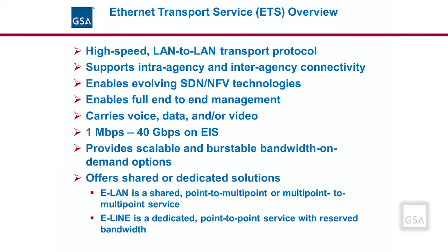Ethernet can be either a shared or dedicated service. Shared Ethernet service means the traffic is multiplexed and carried over shared or common facilities, and competes with other traffic for available bandwidth. The ETS ELAN service option is an example of a shared service. Dedicated bandwidth means all users have a portion of bandwidth dedicated solely to them. The ETS ELAN service option is also an example of a dedicated point-to-point service with reserved bandwidth. Shared is the lower cost option, but dedicated is more reliable because there is no competition for bandwidth resources.